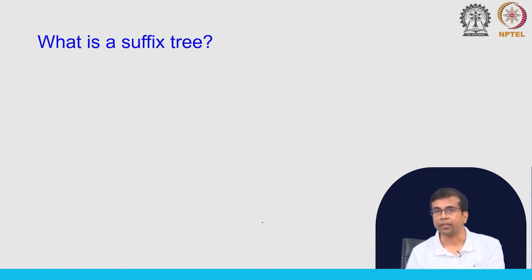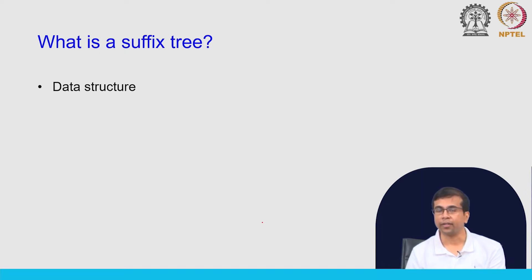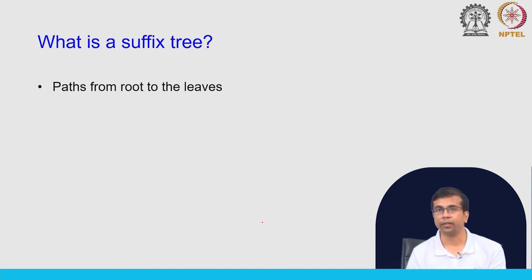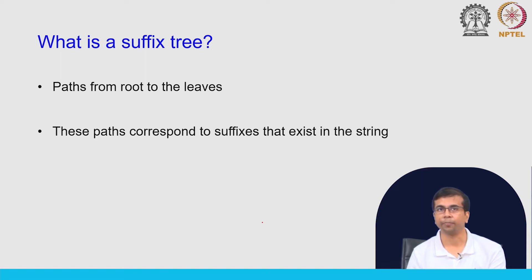Now, what is a suffix tree? We understand what a suffix of a string is, but what is a suffix tree? This is a data structure containing a root and leaves. It is built from the letters of a string. The paths from root to the leaves correspond to the suffixes that exist in the string, and all suffixes of the string will be represented by a path that joins the root and goes to a leaf in that tree.